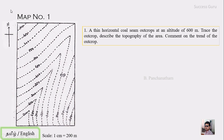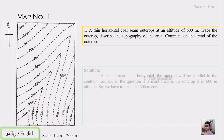In this contoured map you can see there are many contours which start from 200 to 700 meters. The question is: a thin horizontal coal seam outcrops at an altitude of 600 meters — trace the outcrop, describe the topography of the area, and comment on the trend of the outcrop. So we have to trace the outcrop in the map, describe the topography, and comment on the trend — these are three things to solve.